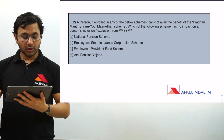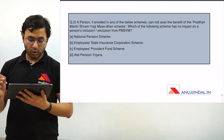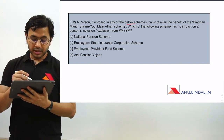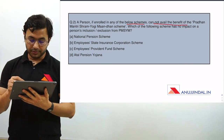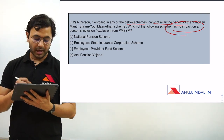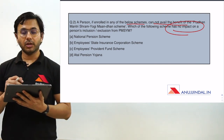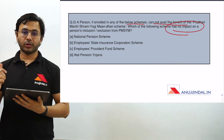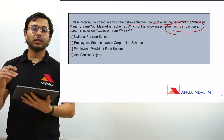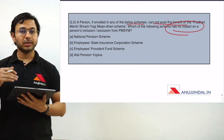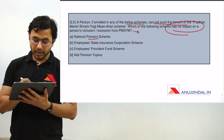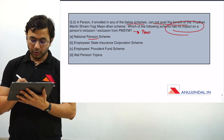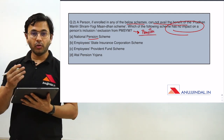Let's come to the second question. A person enrolled in any of the below schemes cannot avail the benefit of Pradhan Mantri Shram Yogi Mandhan scheme. The question asks: which of the following schemes has no impact on a person's inclusion or exclusion from PMSYM? Even if you don't know much about this, you can answer it. PMSYM is specifically for providing pension to people of the unorganized sector.